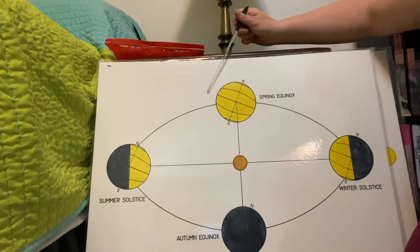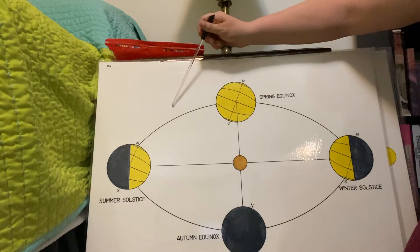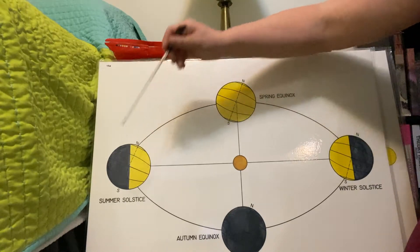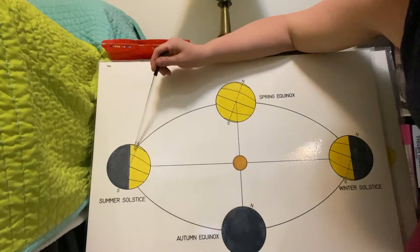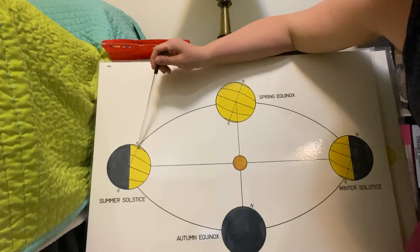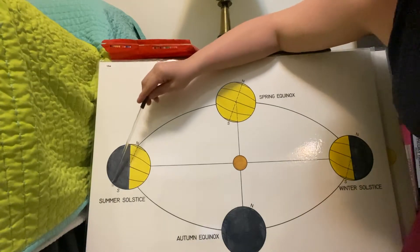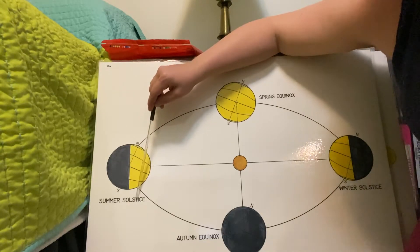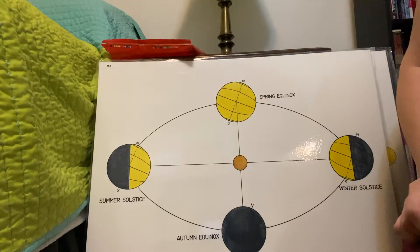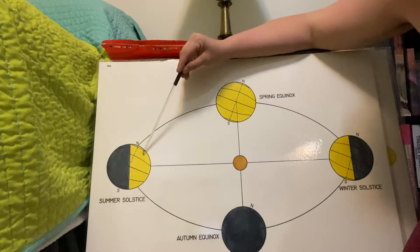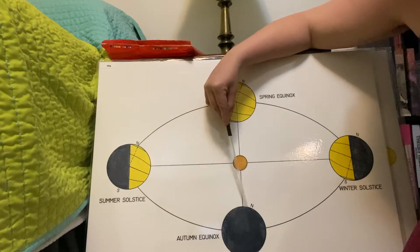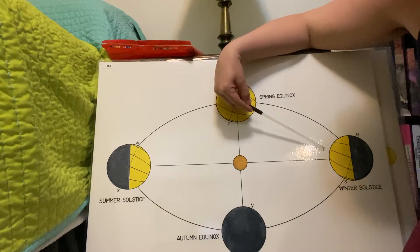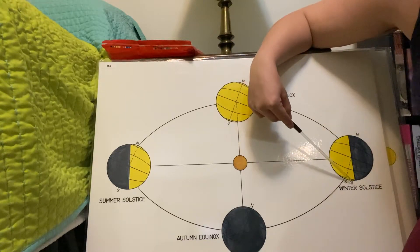As we continued on, our days got longer and our nights got shorter until we had our longest day and our shortest night — we were tilted towards the Sun here. This is our summertime, and we call this the summer solstice. We have another time: when we go here, we have equal days and equal nights, and then we come here where we have our shortest day and our longest night. This is called winter solstice.